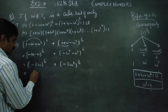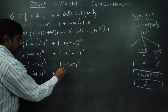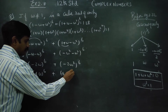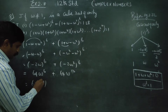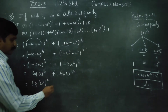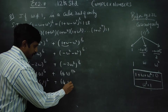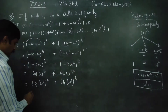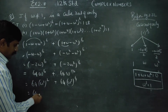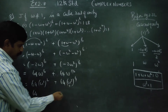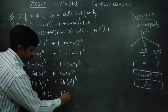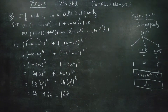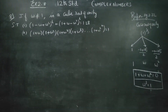Now (minus 2)^6 equals 64. So the first term gives 64 times omega to the power 6. This can be written as 64 times (omega cubed) squared, which equals 64 times 1 squared equals 64. Similarly (minus 2 omega squared)^6 gives 64 times (omega cubed)^4 equals 64 times 1 equals 64. So 64 plus 64 equals 128. Our final answer for subdivision number 1 is 128.